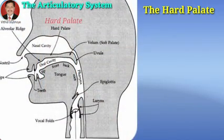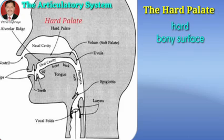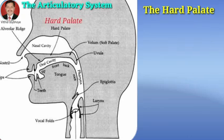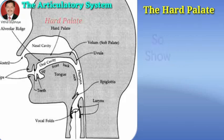After the teeth ridge, there is a very important part of the roof of the mouth known as the hard palate. It lies immediately behind the teeth ridge and is a hard bone surface. With the help of the hard palate we can pronounce some important sounds. For example, the initial sounds of 'so' and 'show' — these two initial sounds are pronounced with the help of the hard palate.